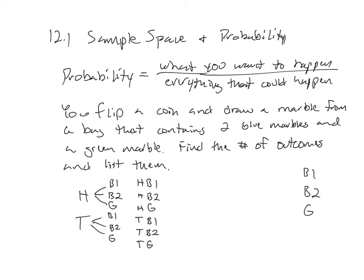The other thing you can do, and this will be helpful moving forward: there are two possible outcomes when I flip a coin — heads or tails — and there were three possible outcomes when I pulled the marbles: blue one, blue two, or green. So if I do three times two, I get six outcomes. So if there were four things possible in the first event and eight in the next, four times eight gives 32 different outcomes. You'll have a couple of problems where you have to list outcomes like that.